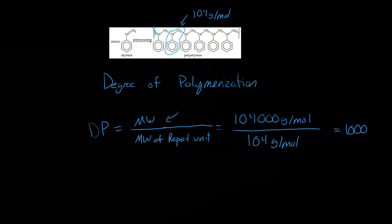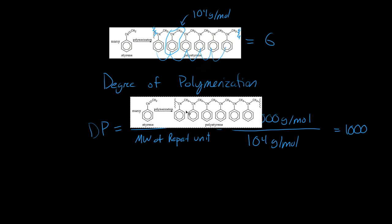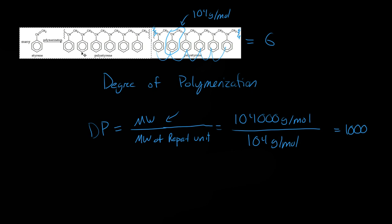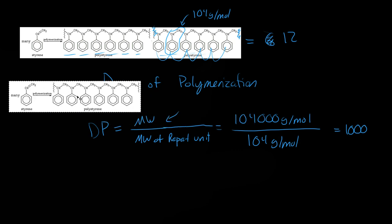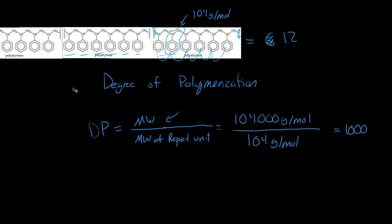If we look at this polymer chain and it's made of just six monomers, then the degree of polymerization is equal to six. But if it's something longer — say twelve units — then the degree of polymerization would be twelve. And if we kept going, it would be eighteen. So the idea is simple: the degree of polymerization is just how many times the monomer is repeated in the polymer.